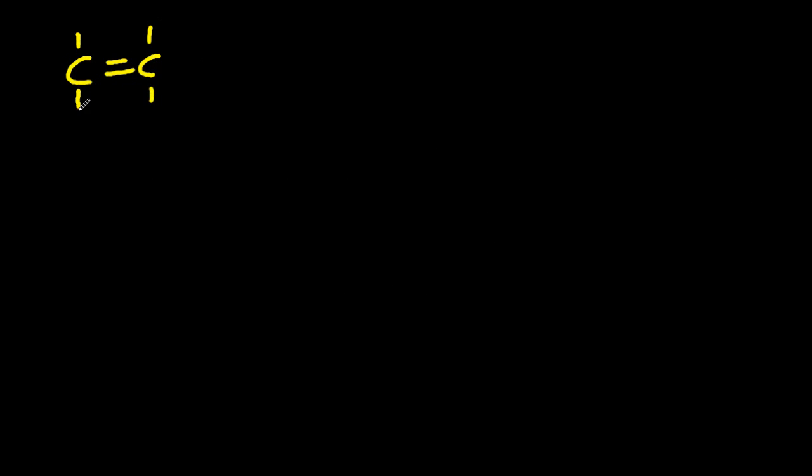Let's look at the alkenes and their isomers. Ethene, the first alkene, has no isomers.